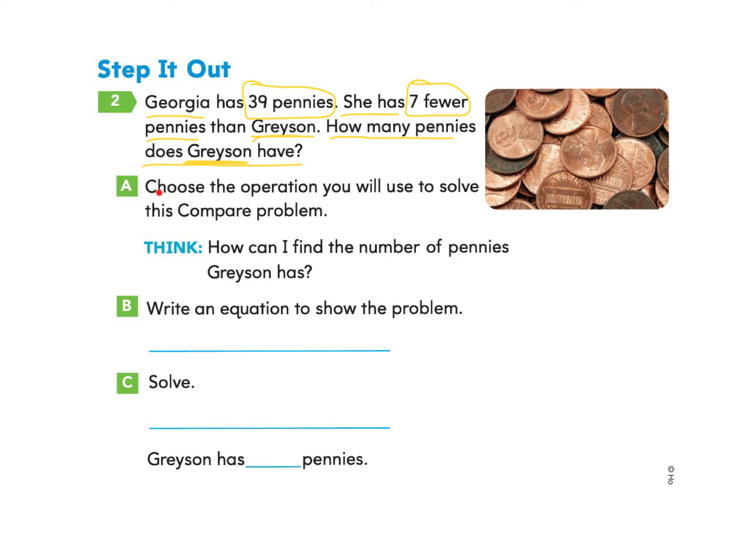First part A asks us to choose the operation you will use to solve this compare problem. Think, how can I find the number of pennies that Grayson has? Let's review the word problem. We know that Georgia has 39 pennies. And then it tells us that she has seven fewer. So that's seven less than Grayson.